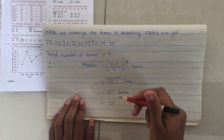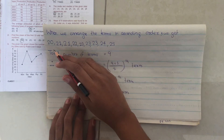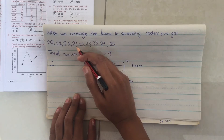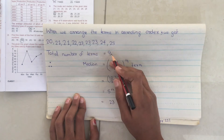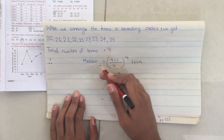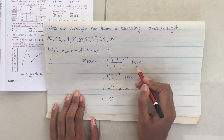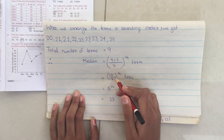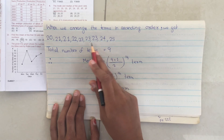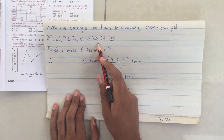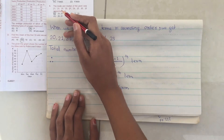Now we have to find the median of the data. To find the median, we first arrange the terms in ascending order: 20, 21, 21, 22, 23, 23, 23, 24, and 25. The total number of terms is 9. To find the median, we use the formula: (9 + 1) / 2 = the 5th term. The fifth term in this set is 23, so 23 is our median. Option A is correct.